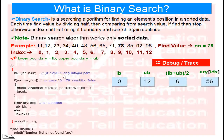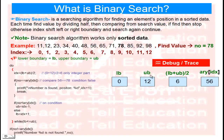Starting the trace: the initial lower boundary is 0 and upper boundary is 12. According to our logic, lower boundary plus upper boundary divided by 2 gives IDX = (0 + 12) / 2 = 6. On the sixth position in the array, the value is 56.